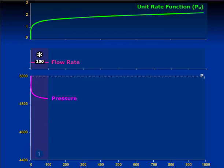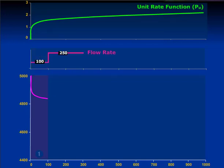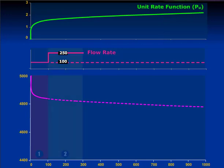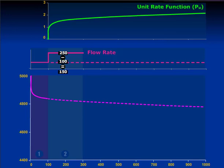Now we come to the second rate. We don't have this second rate function, so what we're going to do is pretend the second rate doesn't exist and continue the first rate going forever. But at this point in time, we're going to start not a new rate but a new well, and the new well has a rate of 250 minus 100. Because it's a new well at a constant rate of 150, we have the unit rate function — but it starts at this time. Now we can apply the same methodology again, superposed on this continuously declining pressure.